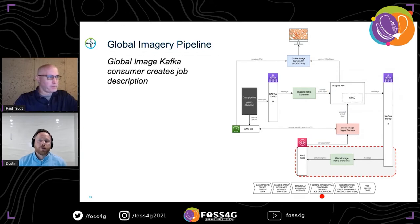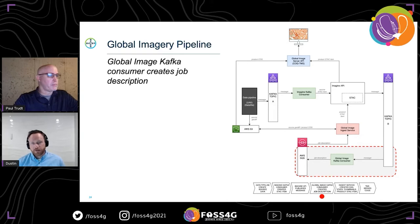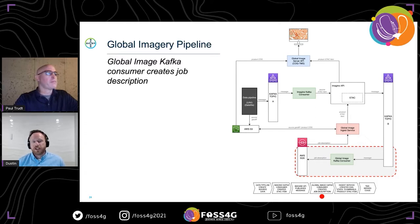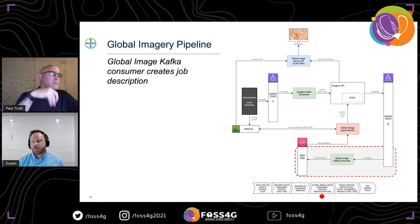The next stage in the pipeline is the global image service, which listens for action messages published by the ImagineAPI. The service only cares about messages related specifically to source image collections. When one of these messages is detected, the service will query the ImagineAPI to find any related product image collections. From the attributes in the product image collection, the service is able to create what we call an ingest job definition. This job definition is then added to one of the processing queues to be later processed by the ingest service.